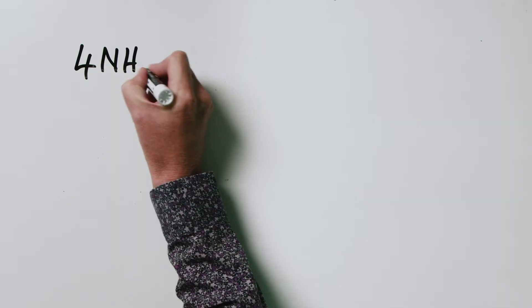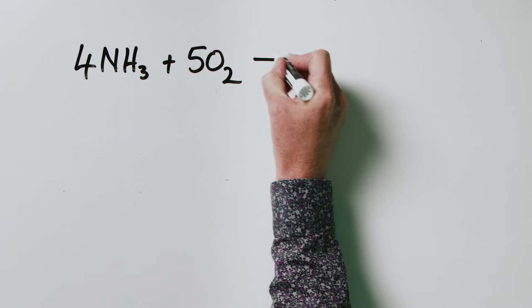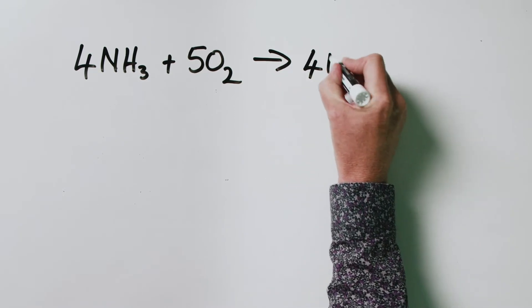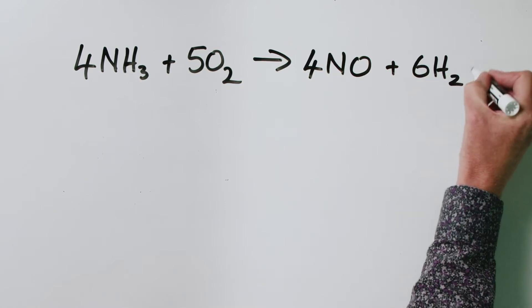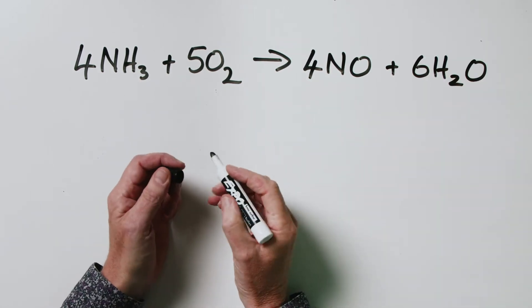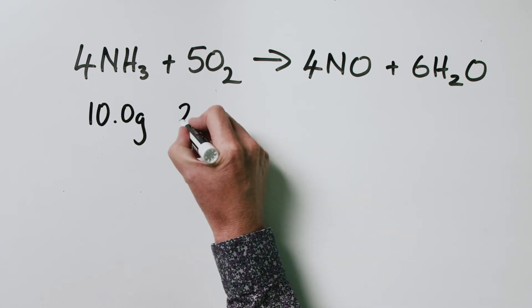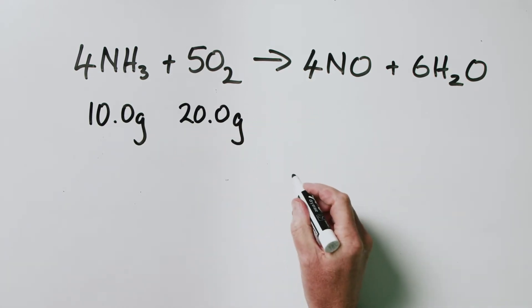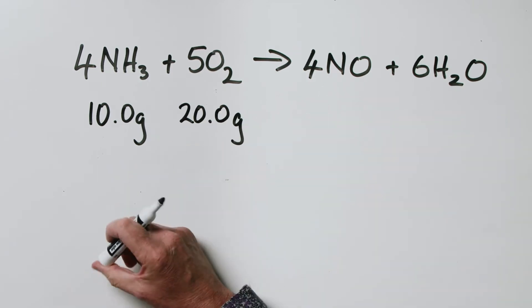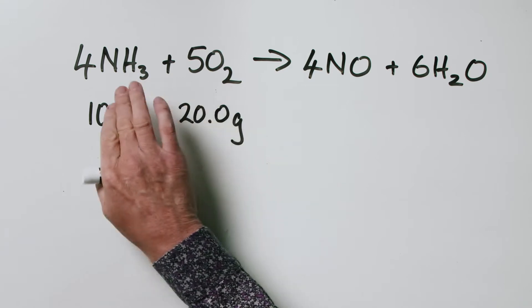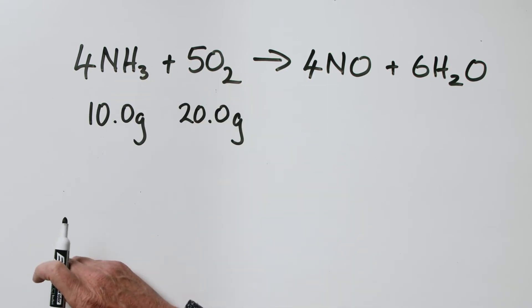We're going to dive right into it and look at a reaction between ammonia and five oxygens, and they react to give four NOs and six waters. Our question is: if we start off with 10.0 grams of ammonia and 20.0 grams of oxygen, how much NO and how much water are we going to get out of this? And because it's a limiting reagent problem, one of these is going to be left over — we want to know which one and how much.